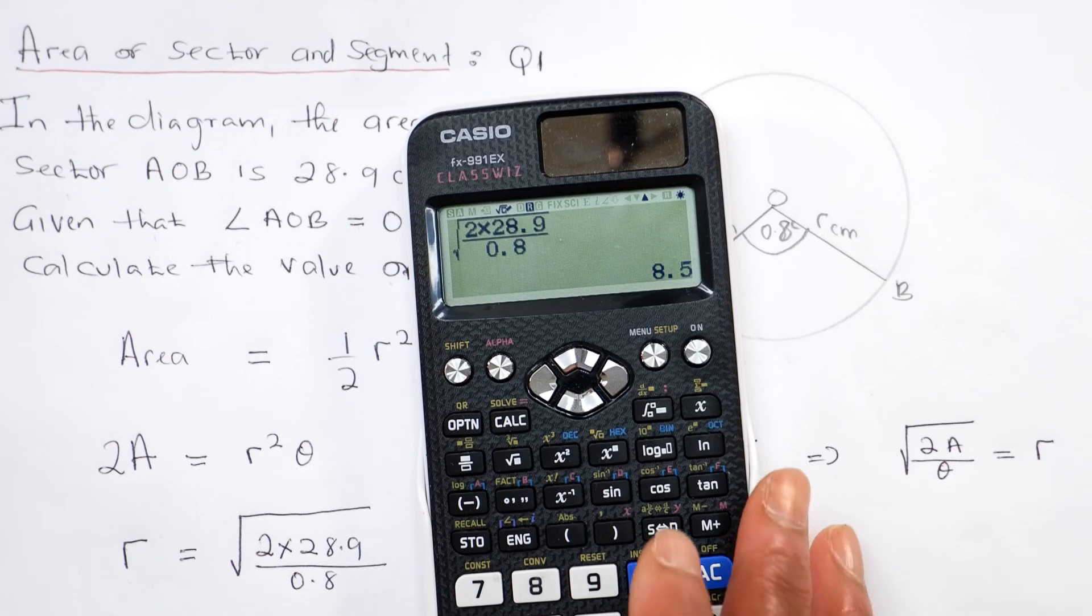Equals to 17 over 2, press standard to decimal, 8.5. So the radius will be 8.5 centimeters.